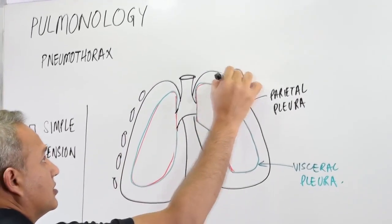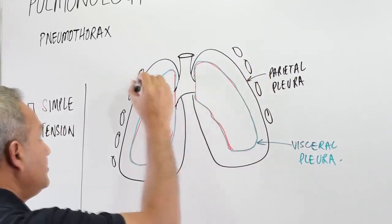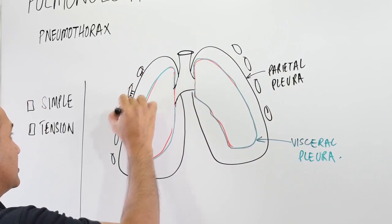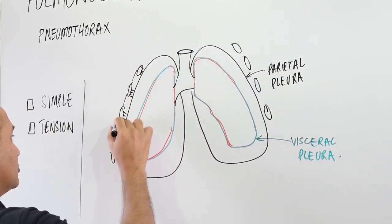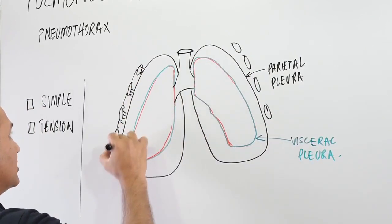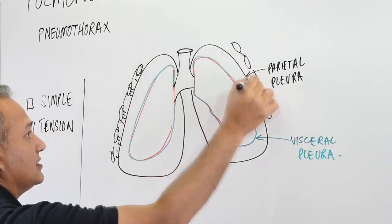So this is the ribs, these are the ribs, right? And the ribs are connected with the parietal pleura. The whole chest wall is connected with the parietal pleura and that chest wall...